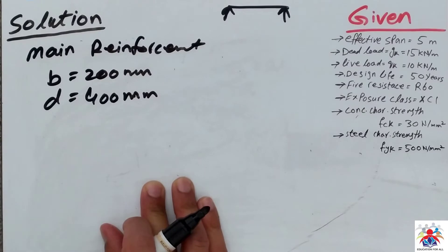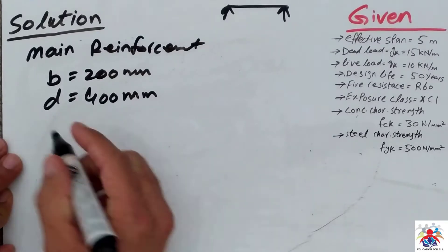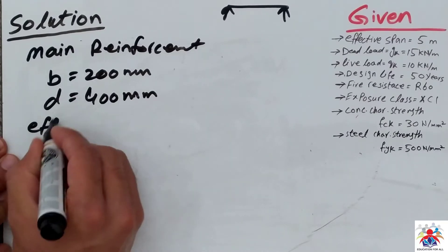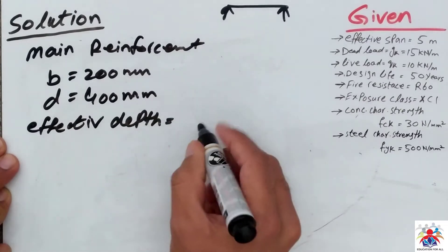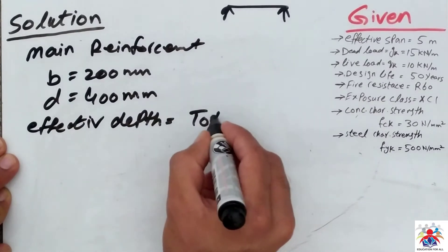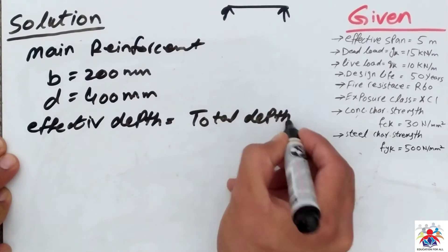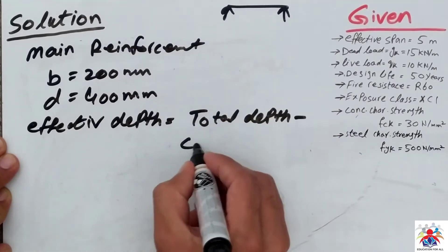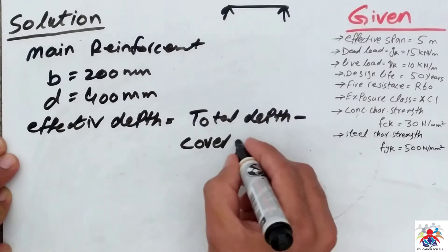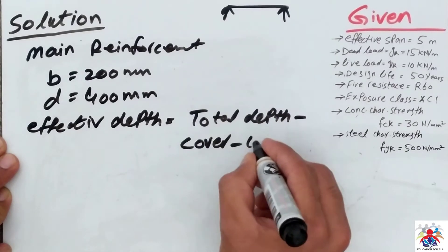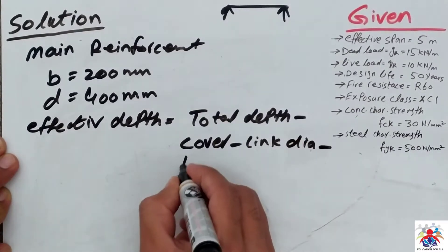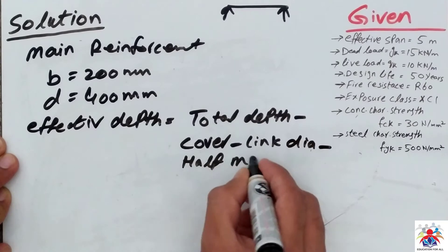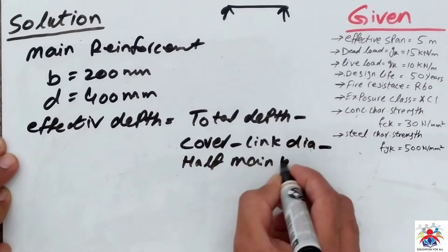Before calculating further we have to calculate the effective depth, because we always work with effective depth. The formula for effective depth is: total depth minus concrete cover, minus link diameter, minus half the main bar diameter.